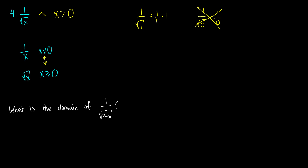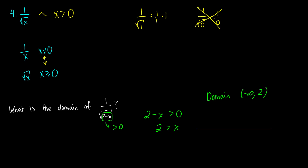So when we ask what is the domain of 1 over the square root of 2 minus x, we need to check that 2 minus x is strictly greater than 0. We set 2 minus x greater than 0, add x to both sides, and get 2 is greater than x. So the domain is x less than 2, meaning it goes from negative infinity to 2, not including 2. On a number line, if 2 is marked, we cover all the space to the left, not including 2.